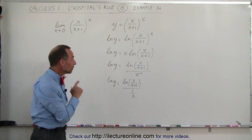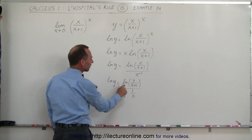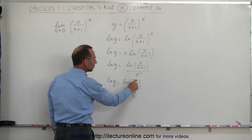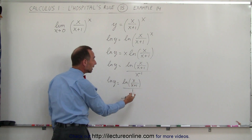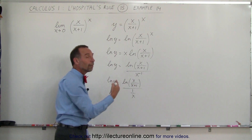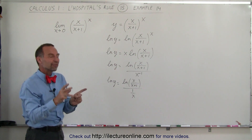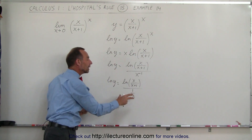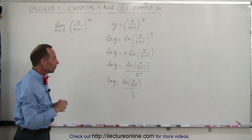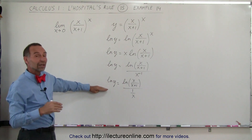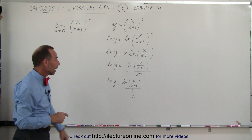Now what would happen if we took the limit of that? If we take the limit as x approaches 0, we get the natural log of 0 divided by 1 over 0. The natural log of 0 is negative infinity and 1 over 0 is positive infinity, so we get an infinity over infinity condition. This means we can take the derivative of both the numerator and the denominator — we have the L'Hôpital's rule condition.